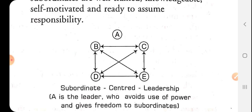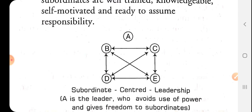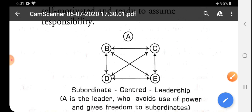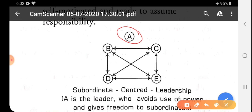This is a subordinate-centered leadership. In autocratic style, the leader was dominating and did not ask his subordinates anything — it was boss-centered. Here, it is subordinate-centered, meaning all work is done by followers and subordinates. The leader is somewhere at the top with no direct involvement. Subordinates B, C, D, E exchange information among themselves, take suggestions from each other, and make their own decisions. The leader A has simply delegated all authority to them. This leadership style is also known as subordinate-centered leadership, where the leader avoids use of power and gives freedom to subordinates.